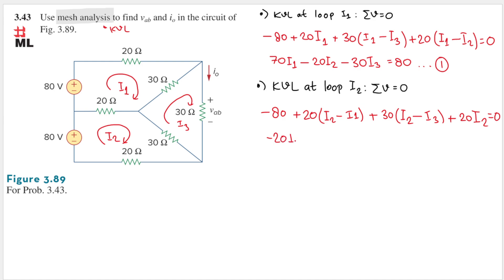Simplifying loop I2: the I1 term gives minus 20I1. The I2 term comes from three resistors: 20 + 30 + 20 = 70, so plus 70I2. The I3 term gives minus 30I3. Moving the source to the right side gives 80. This is Equation 2.